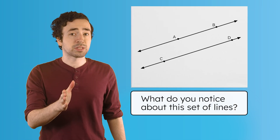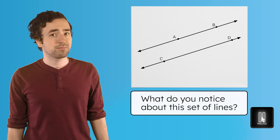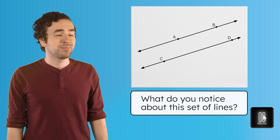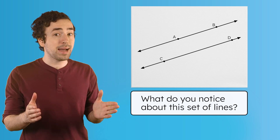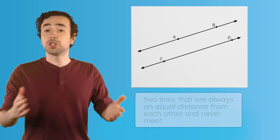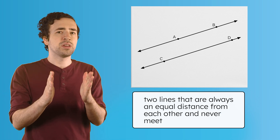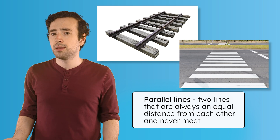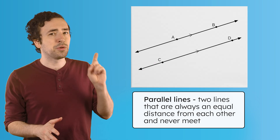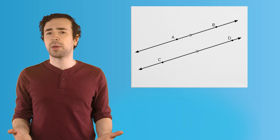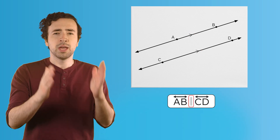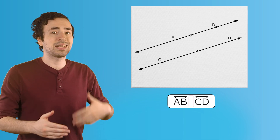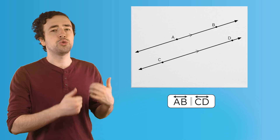Is there a way we can describe more than one line, or a set of lines? Check out these two lines — what do you notice about them? These lines run alongside each other, but they don't ever touch. When two lines are always an equal distance from each other and never meet, we call them parallel lines, like railroad tracks or crosswalk markings. Parallel lines on a model will often have little feathers to help you identify them. When naming parallel lines, we use a symbol that looks like two vertical bars next to each other, so this says line AB is parallel to line CD.